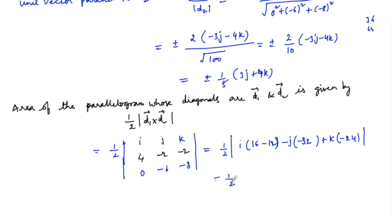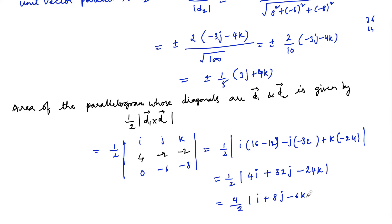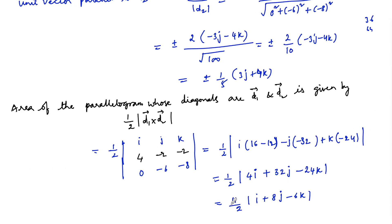So the cross product is 4i + 32j - 24k. Taking 4 as common: (4/2)|i + 8j - 6k| = 2√(1 + 64 + 36) = 2√101. Therefore, the area of the parallelogram when the diagonal vectors are given is 2√101 square units.